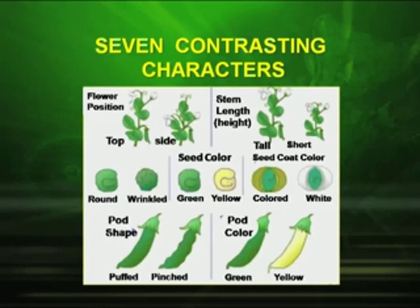And then the pod shape — whether it is puffed or pinched — and the pod color — whether it is green or yellow. So these were the seven contrasting characters studied by Mendel.